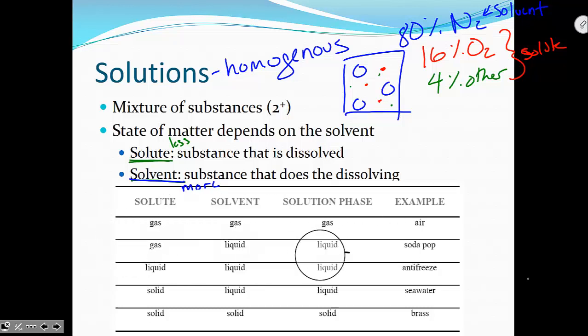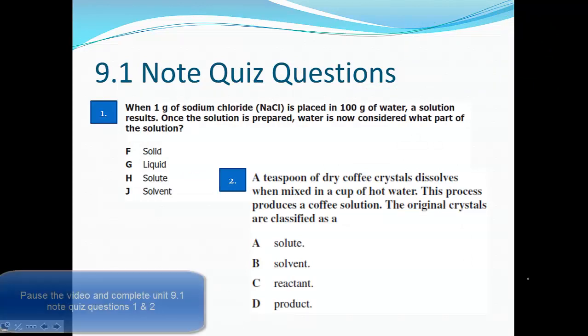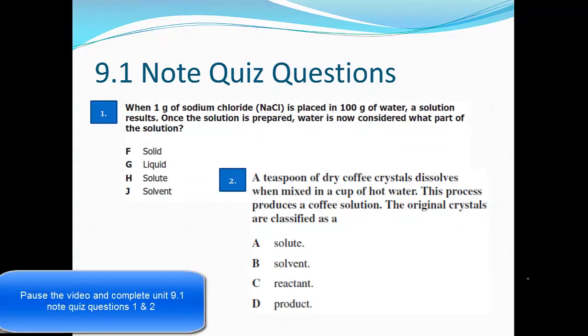Soda is an example of a gas dissolved into liquid. Or if I have two metals and I dissolve one into another, that makes an alloy. Alloys are solutions of metals. Which brings us to note quiz question 1 and 2. Pause the video and answer unit 9.1 note quiz question 1 and 2.